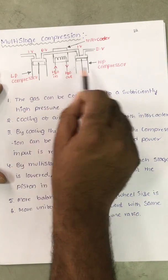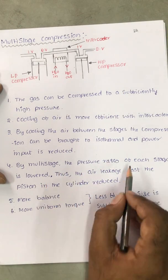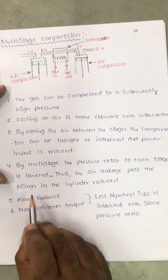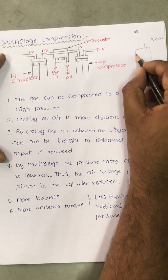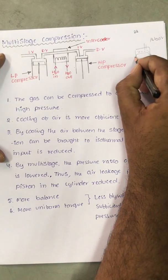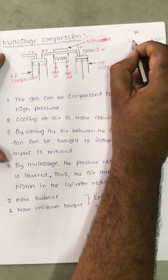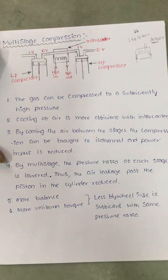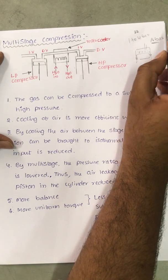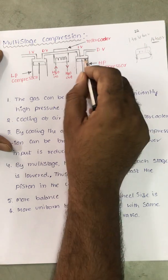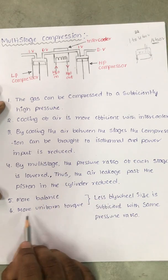With multistage compression, the pressure ratio of each stage is lowered. For example, to achieve 16 bar with a single cylinder, pressure leakage past the piston is very high. But with multi-cylinder compression — first from 1 to 4 bar, then 4 to 16 bar — the pressure ratio per stage is only 4, so the escape of gas past the piston is greatly reduced. Thus, air leakage past the piston in each cylinder is reduced.